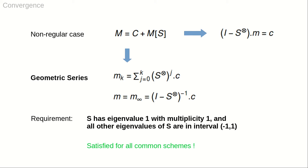if the subdivision matrix S has eigenvalue 1 with multiplicity 1 and all other eigenvalues in the open interval minus 1 to 1. The criteria is easily verified for all common schemes.